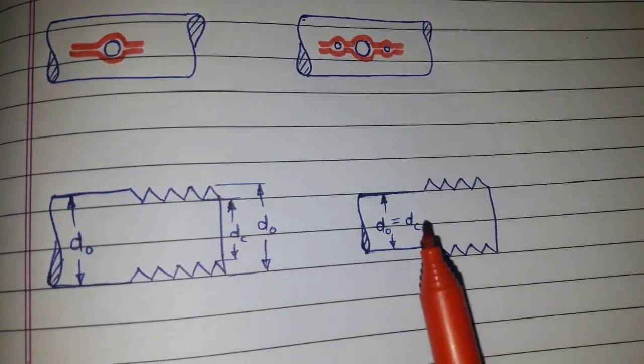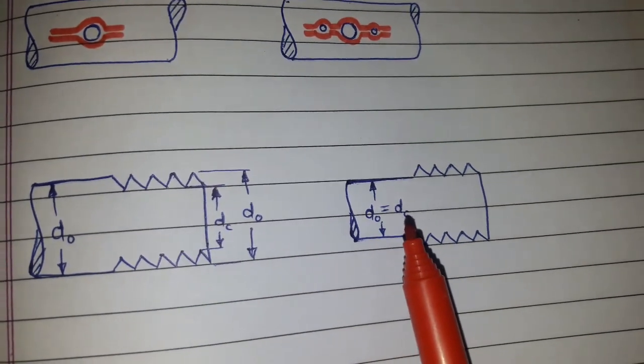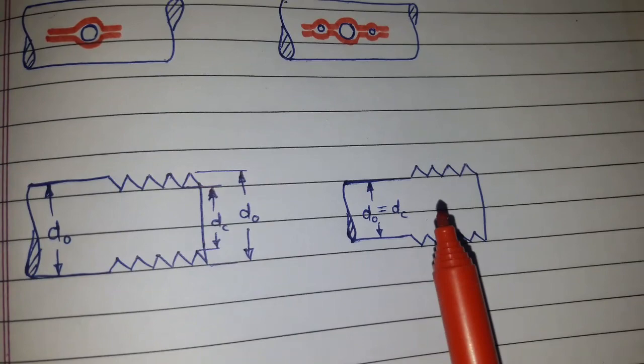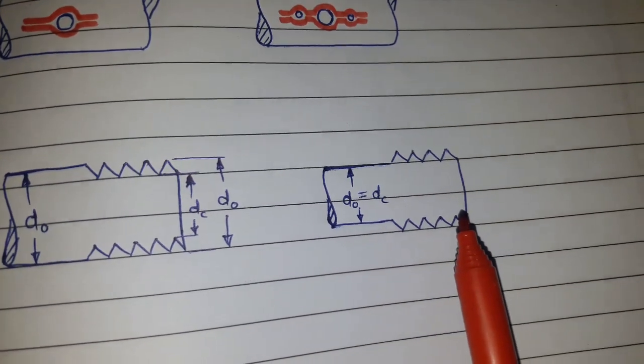So what we can do, the shank diameter DO, we can keep equal to DC that is the core diameter, so that the stress is not concentrated in the threaded section.